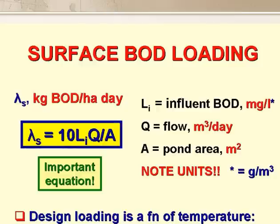If the influent BOD Li is in milligrams per litre — which is the same as grams per cubic metre — the flow Q is in cubic metres per day, and the area A is in square metres, then λs equals 10 × Li × Q ÷ A. The factor of 10 arises because there are 10³ grams in a kilogram and 10⁴ square metres in a hectare.